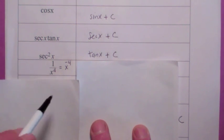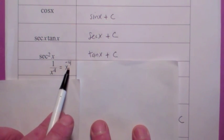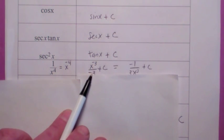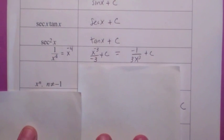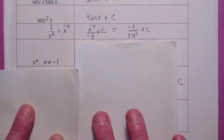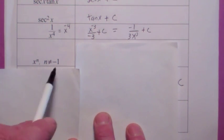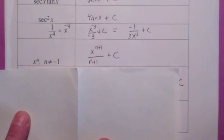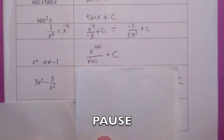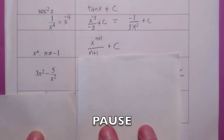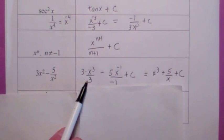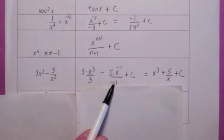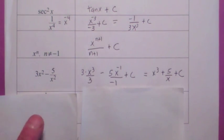What's the most general antiderivative of 1 over x to the 4th? Remember, that's x to the negative 4th. You add 1 to the exponent and divide by the new exponent, so simplified you get negative 1 over 3x to the 3rd, plus C. Now we're ready to generalize: the rule for finding the most general antiderivative of x to the n, for any real number n not equal to negative 1, is you add 1 to the power and divide by the new power, plus C. Hit the pause button — see if you can find the most general antiderivative of 3x squared minus 5 over x squared. The 3 factors out; you add 1 to the exponent and divide by the new exponent. Think of 5 over x squared as 5x to the negative 2, and apply the same rule. When you simplify, you get x cubed minus 5 over x, plus C.